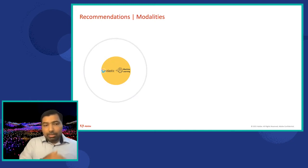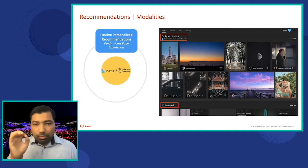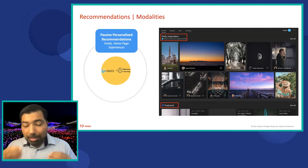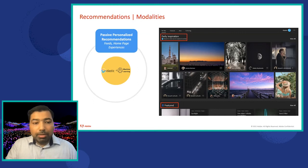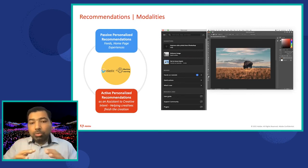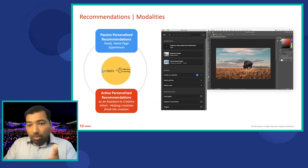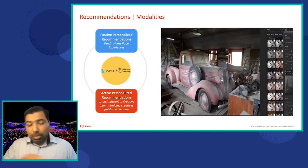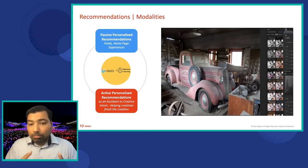There is another way to think about scope: recommendations, or what is a fancy word for discovery. There are two modalities: the first is passive recommendations — like YouTube recommendations — where we have our own personalized feeds we power at various experiences. The second is active recommendations, where the assistant comes in: while a user is creating something, can we predict the next actions they need? On Photoshop, the Discover Panel does that. And we're launching a new feature in Lightroom in coming months with a similar flavor.